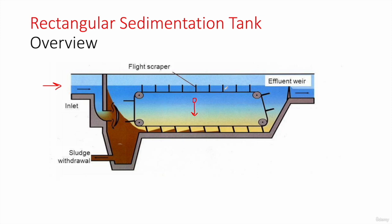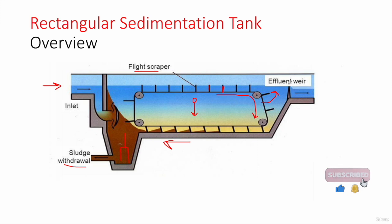These particles form a sludge layer. To remove this layer, we have a mechanical device equipped with flight scrapers. This device rotates and the scrapers move the sludge into a hopper. From the hopper, the sludge is withdrawn by gravity if possible, or pumped for further treatment to be safely disposed of or reused. The clean water then leaves through an effluent structure to minimize turbulence.